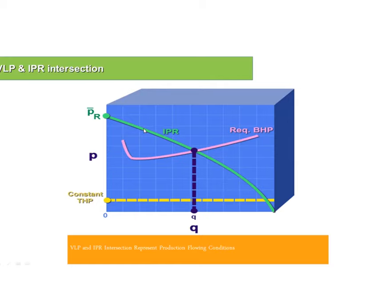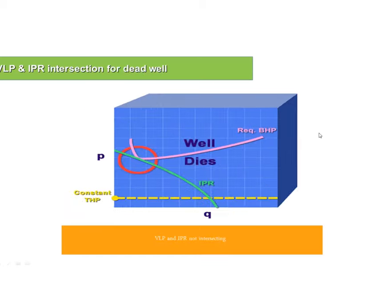When the curves change — for example if I have a different reservoir pressure, the IPR curve will shift. Similarly, if I have different tubing head pressure or water cut, the outflow performance curve will shift up or down. The next slide will make this clear.